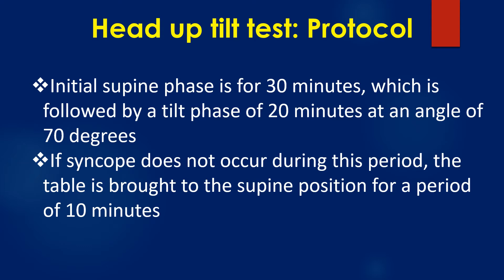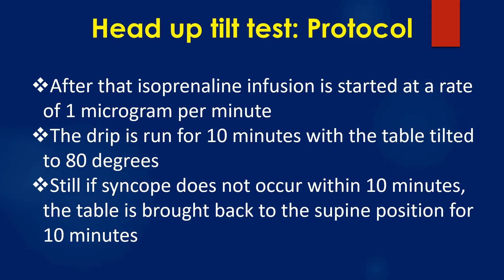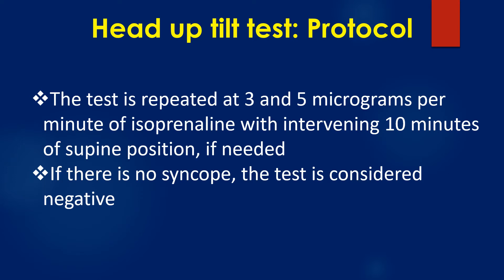If syncope does not occur during this period, the table is brought to the supine position for 10 minutes. After that, isoprenaline infusion is started at 1 microgram per minute, with the table tilted at 80 degrees for 10 minutes. If syncope still does not occur, the table returns to supine for 10 minutes, and the test is repeated at 3 and 5 micrograms per minute of isoprenaline with intervening 10-minute supine periods if needed.